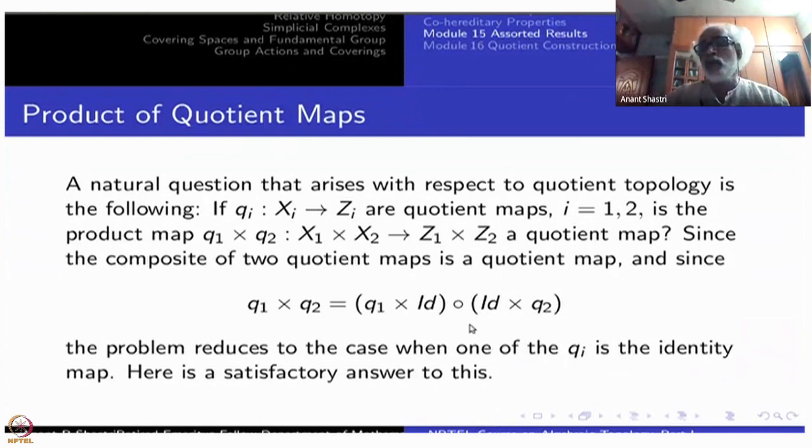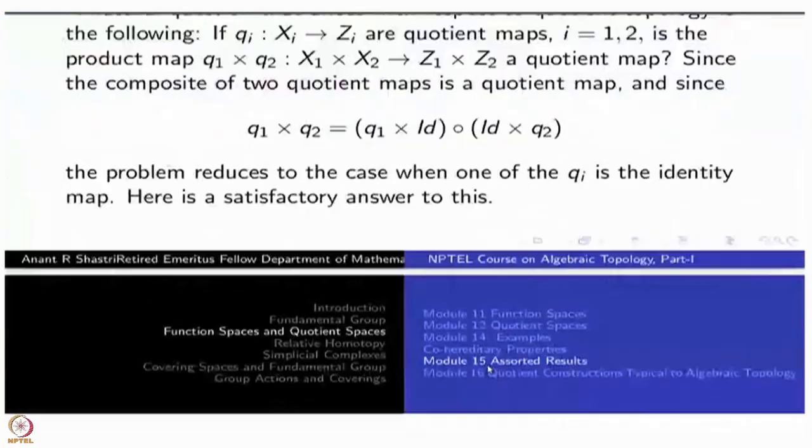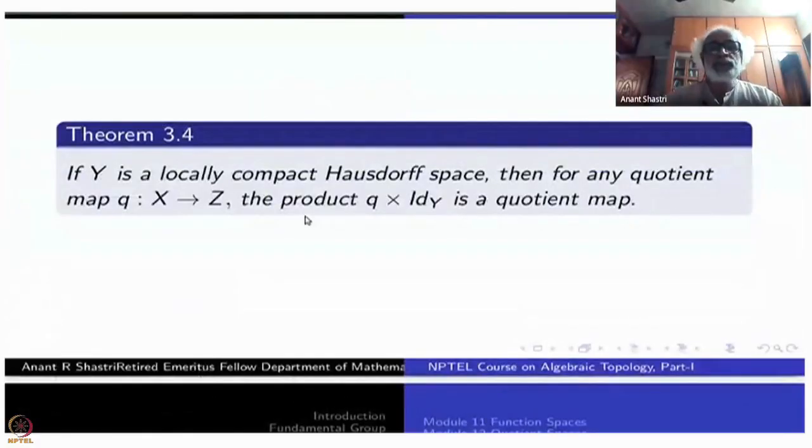Here is a satisfactory answer. Suppose Y is locally compact Hausdorff, and X to Z is any quotient map. So what you are doing is taking product with a locally compact Hausdorff space. Then Q × identity of Y is a quotient map.